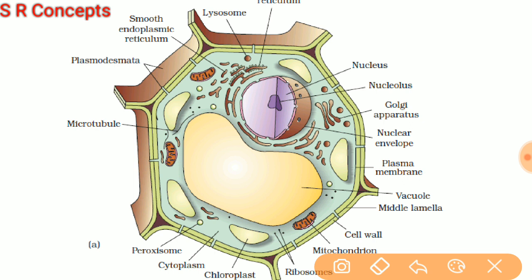Cell organelles are the organs of a cell which perform different functions. First, note this type of structure — this is a mitochondrion (singular), and the plural is mitochondria. Mitochondria is a cell organelle which performs the function of production of energy from food, that is called respiration. Mitochondria performs cellular respiration and produces energy for the cell, and that's why mitochondria is also called the powerhouse of the cell.